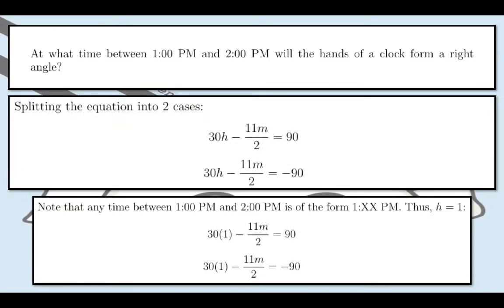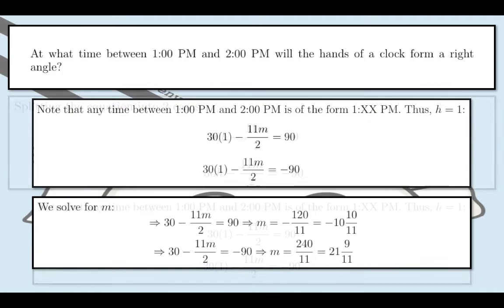Now we have two equations and then we'll be able to get our two values for m. Note that any time between 1pm and 2pm is of the form 1:XX PM. Therefore, we can use that h equals 1. So that's the key thing here. We only need to solve for the value of m since we already know the value of h.